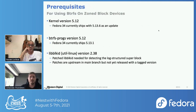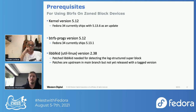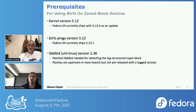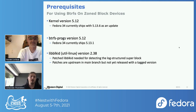The prerequisites for using ButterFS on zone devices: kernel version 5.12 - Fedora 34 currently ships 5.13 as an update. ButterFS-progs 5.12 - that's also good in Fedora, which ships 5.13. And then the blk-id from the util-linux package has been patched to detect the new log-structured superblocks. These patches are upstream in the main branch, but there is no official release tagged with a version containing these patches, though they are relatively easy to backport to a local RPM.